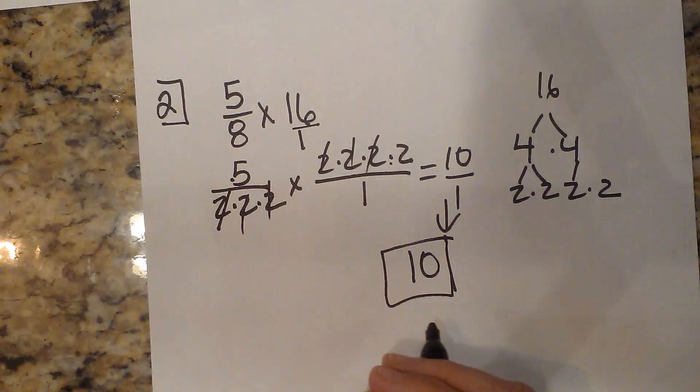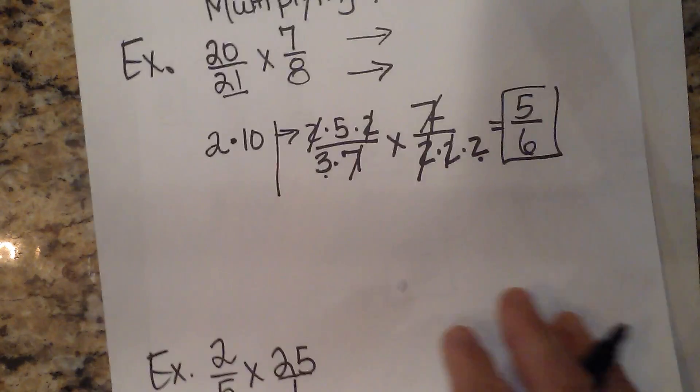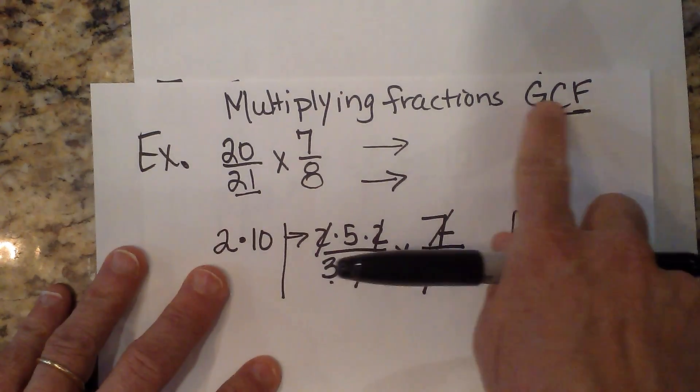So there you go. That's how you multiply fractions using greatest common factors.